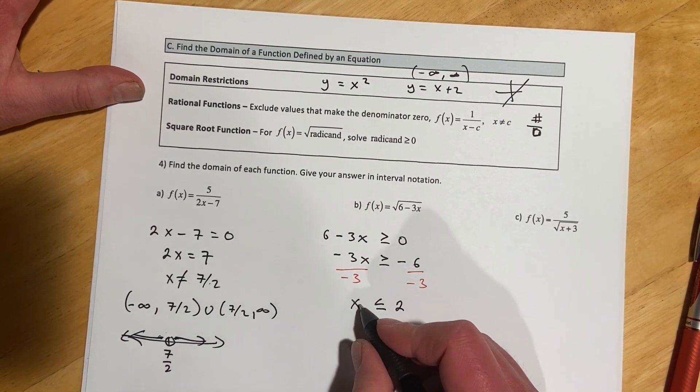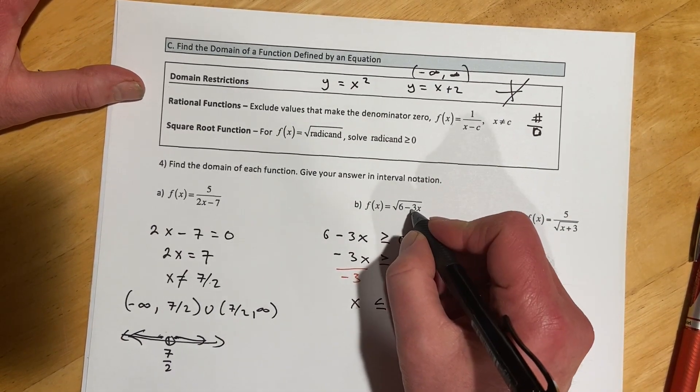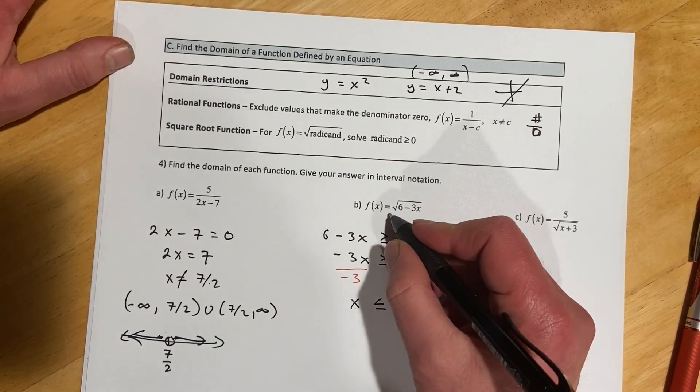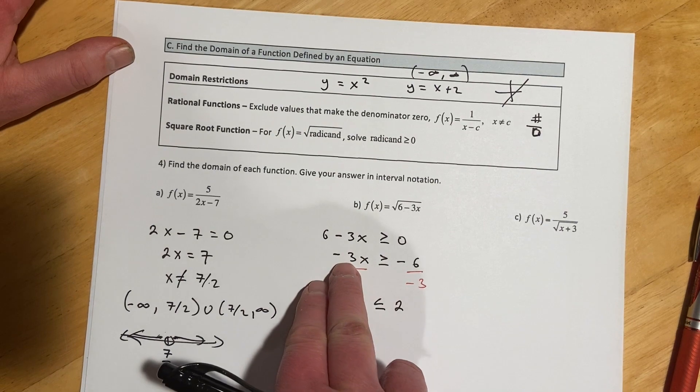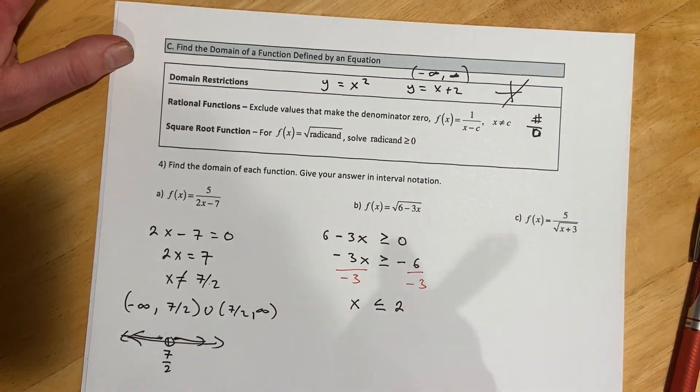If you tried something larger than that, say 3, 6 minus 3 times 3, that would be 6 minus 9, negative 3, that doesn't work. So again, if you multiply or divide by a negative, just remember to flip the inequality.